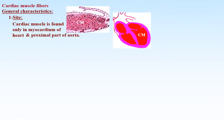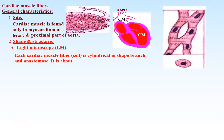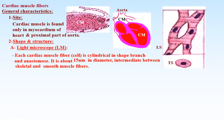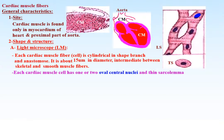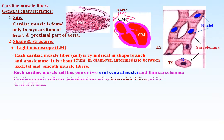Cardiac muscle fibers are found only in the myocardium of the heart and the proximal part of the aorta. By light microscope, each cardiac muscle fiber or cell is cylindrical in shape, branched and anastomosing. It is about 15 microns in diameter, intermediate between skeletal and smooth muscle fibers. Each cardiac muscle cell has one or two oval, centrally located nuclei and has a thin sarcolemma.